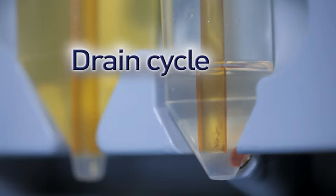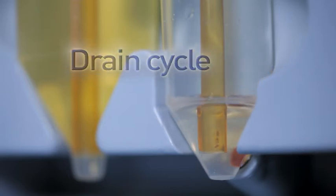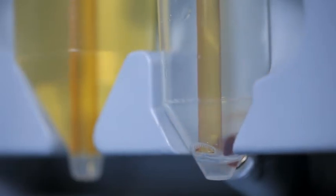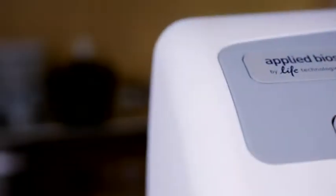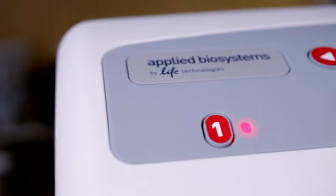The excess PBS will be removed from the elution tube and transferred to the sample tube. All that's left in the elution tube are the auto beads and a small amount of PBS. When the run is completed, a constant red light will appear.